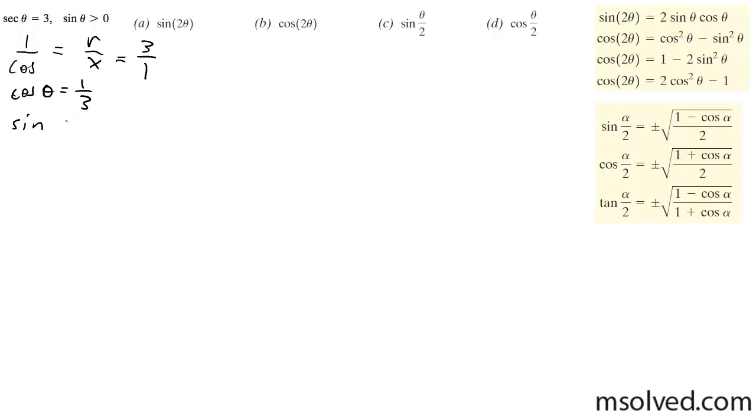So then the sine of theta is going to be equal to 3 squared minus 1 squared, which is equal to 8 and square root of 8. So this ends up being square root of 8 or 2 root 2. All right, so now we can go ahead and do this.